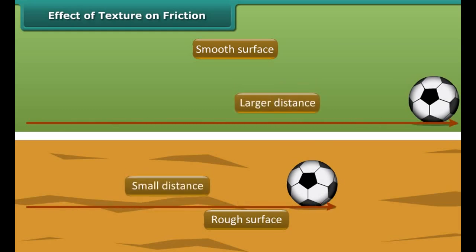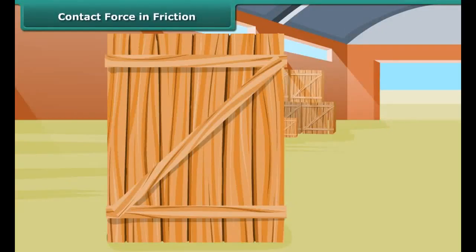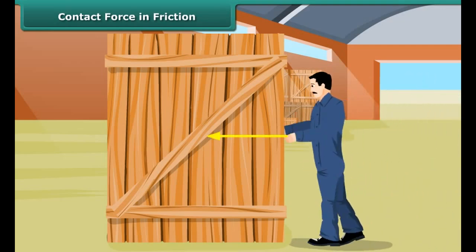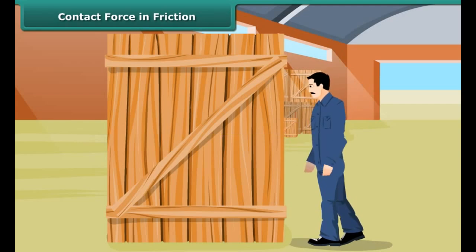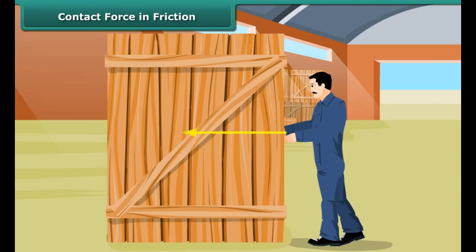In this figure, a ball is rolled on a smooth surface and another similar ball on a rough surface. Both balls start rolling with the same speed, same force, and at the same time. The ball rolling on the smooth surface travels a larger distance than the ball rolling on the rough surface. This shows that rough surfaces offer more friction than smooth surfaces.